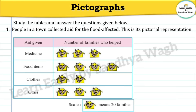Study the tables and answer the questions given below. The first question: people in a town collected aid for the flood affected. This is its pictorial representation. 'Aid' means help, and 'flood affected' means people affected by heavy rainfall and flooding. The people of a village collected help for such people, and it is shown in this table. The table shows: Aid given — what type of help was given — and the number of families who helped.